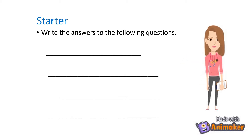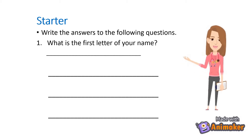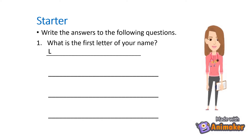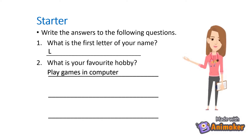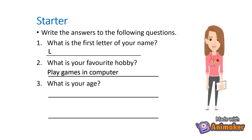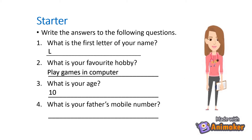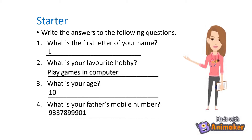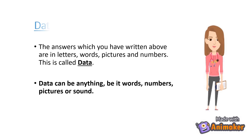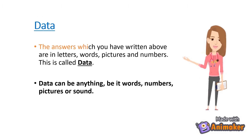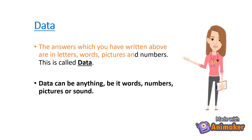Starter: Write the answers to the following questions. 1. What is the first letter of your name? — L. 2. What is your favorite hobby? — Play games on computer. 3. What is your age? 4. What is your father's mobile number? — 9337899901. The answers which you have written above are in letters, words, pictures and numbers.